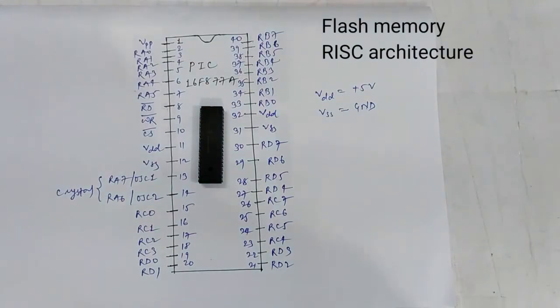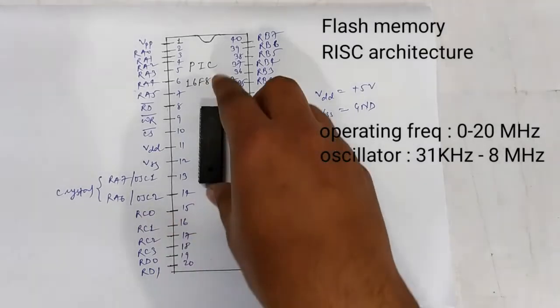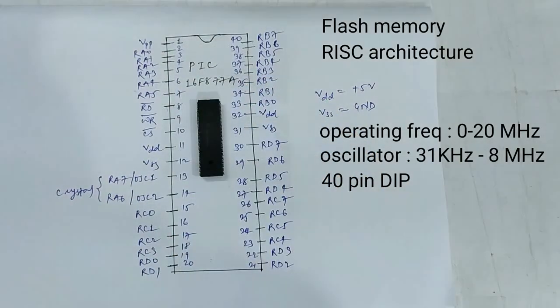The operating frequency ranges from 0 to 20 megahertz, and it can be powered between 2 to 5 volts. We can connect the oscillator between 31 kilohertz to 8 megahertz. There are 40 pins as I mentioned.